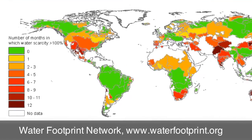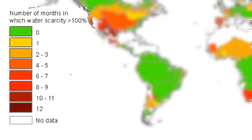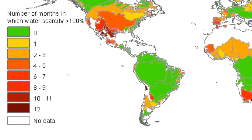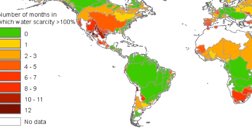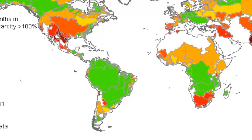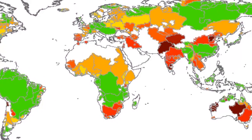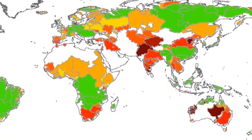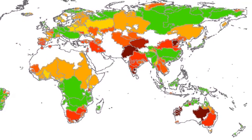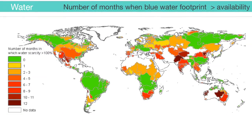If we look at the global picture, we see that some regions do not experience a scarcity of water; however, many regions have water scarcity several months out of the year. This graphic depicts the regions throughout the world where the amount of water needed to sustain human life and dilute pollutants to acceptable levels exceeds what is available through rivers and groundwater.